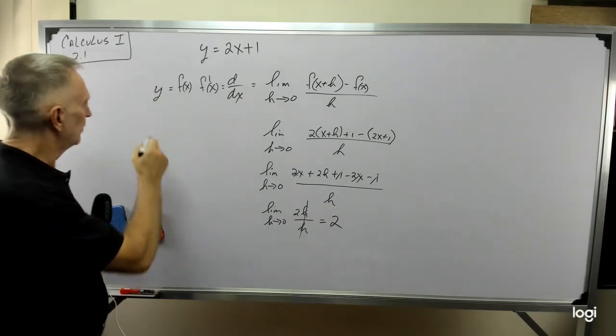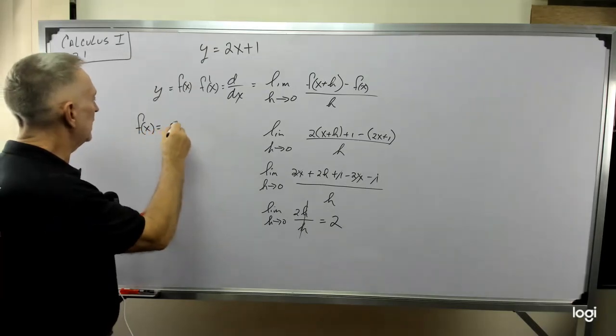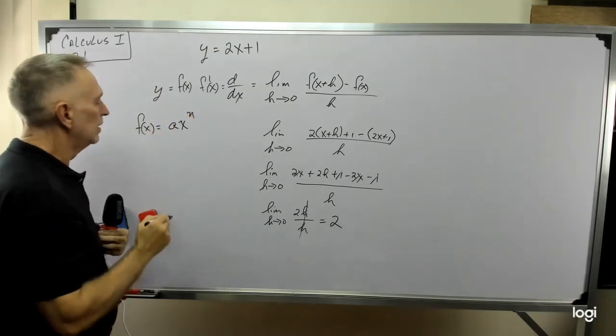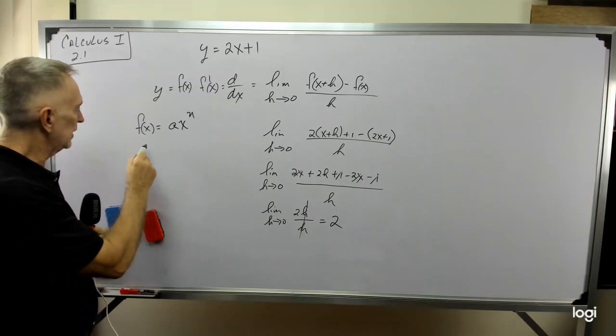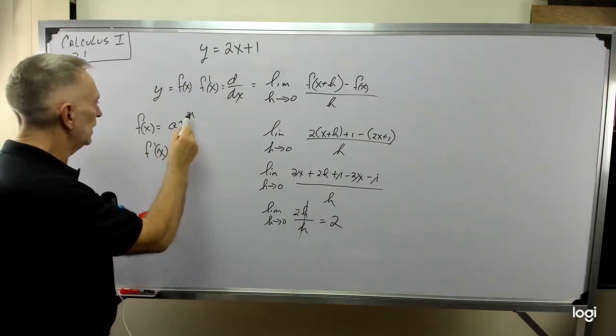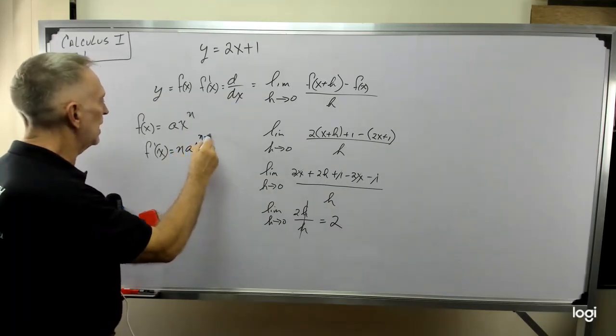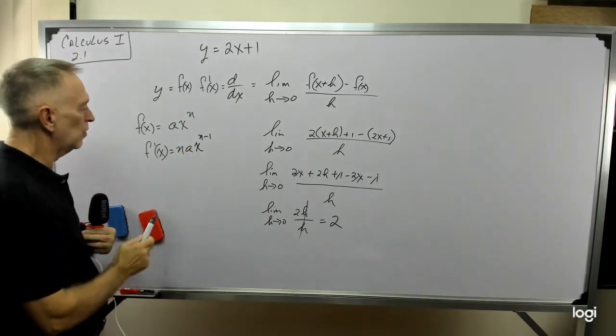Okay, it's called the power rule. Let's say f of x equals ax to the n. The power rule says if I want to take the derivative of that function, it equals the exponent times ax to the n minus 1. I decrease the exponent by 1.